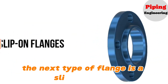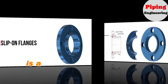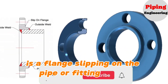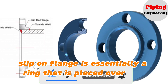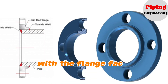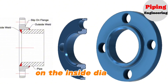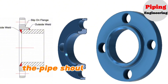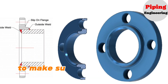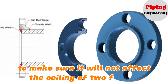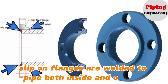The next type of flange is a Slip-on Flange. As the name suggests, it is a flange that slips on the pipe or fitting during connection. Slip-on Flange is essentially a ring that is placed over the pipe end, with the flange face extending from the end of the pipe by enough distance to apply a weld bead on the inside diameter. The pipe should be inserted into the flange inner bore, leaving a bit of distance from the face of the flange to ensure it will not affect the sealing of the two flanges. Slip-on Flanges are welded to the pipe both inside and outside.